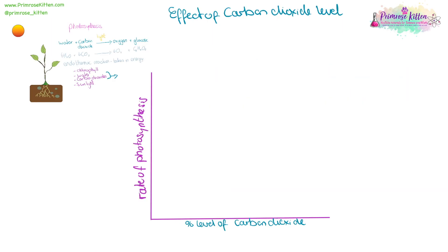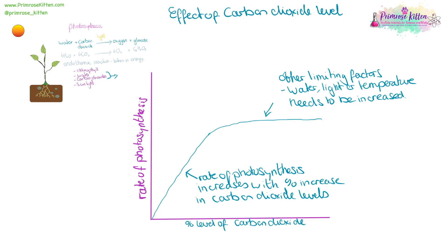The rate of photosynthesis is going to depend on the percentage level of carbon dioxide. As the percentage level of carbon dioxide increases, so the rate of photosynthesis is going to increase, but only up to a point. After this point, there are going to be other limiting factors — we need to increase something like the water, light, or the temperature if we want more photosynthesis to take place. We could easily switch this out to the percentage level of water, and the graph would look the same.